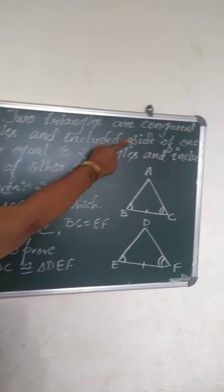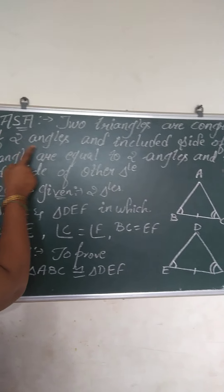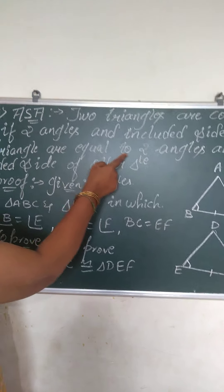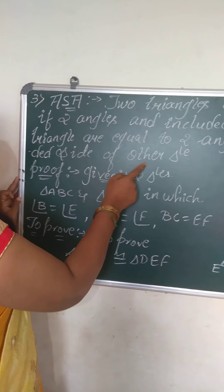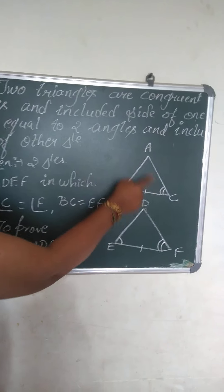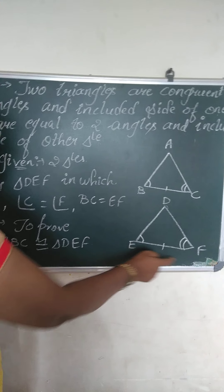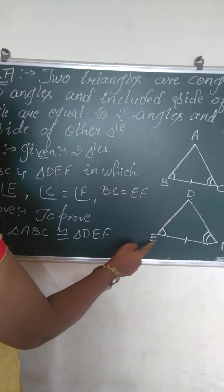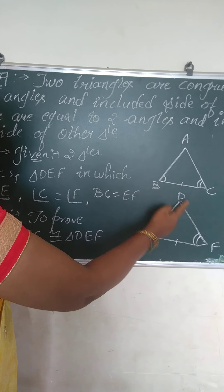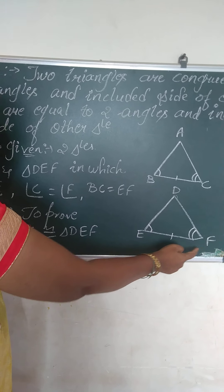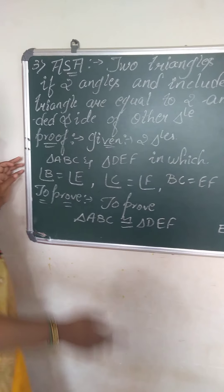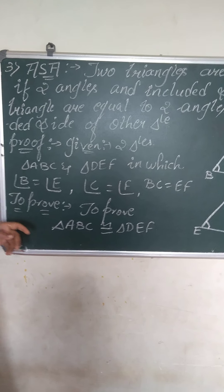Two triangles are congruent if two angles and the included side of one triangle are equal to the two angles and the included side of the other triangle. Here we are given two triangles, triangle ABC and triangle DEF, with angle B equal to angle E, angle C equal to angle F, and BC equal to EF. We have to prove these two triangles are congruent.